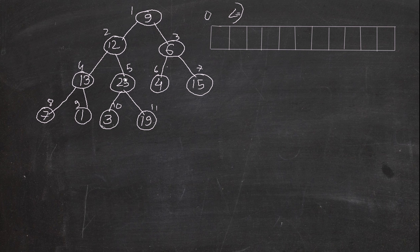We always start from the last parent. This is the last parent, this is the second last, third last, fourth last. So we deal with them in order: this one first, second, third, fourth, and lastly the root. We can see the parent is greater here — max-heapify is fulfilled — so it's fine. 25 is greater. Moving on: 13 is greater than 7 and 1, so that's also fulfilled.